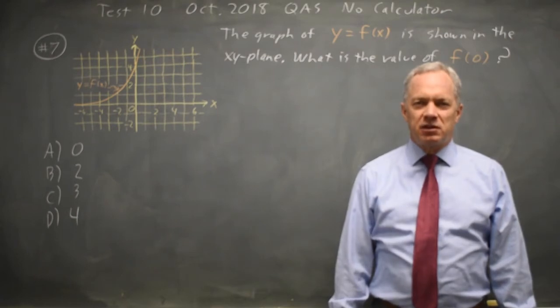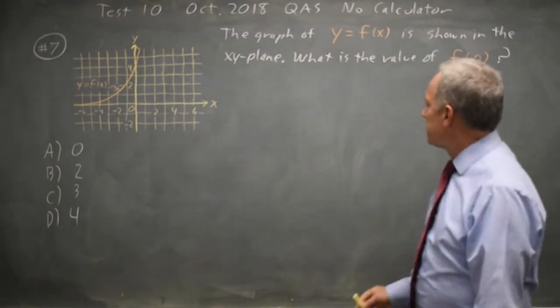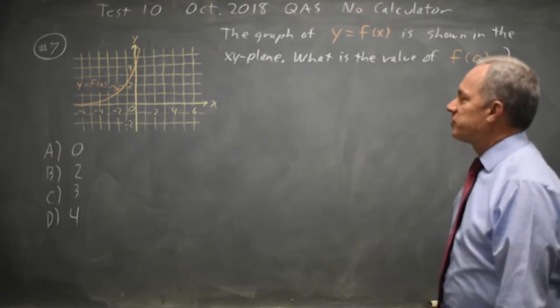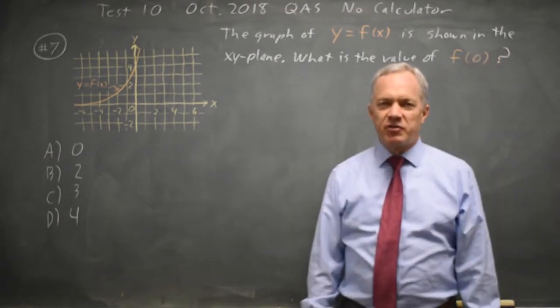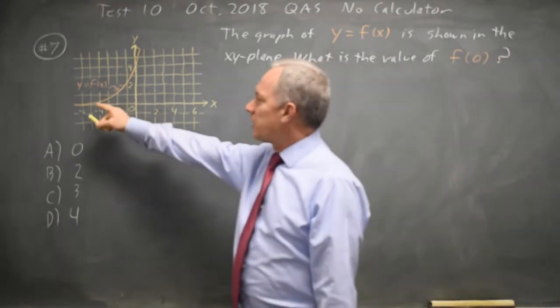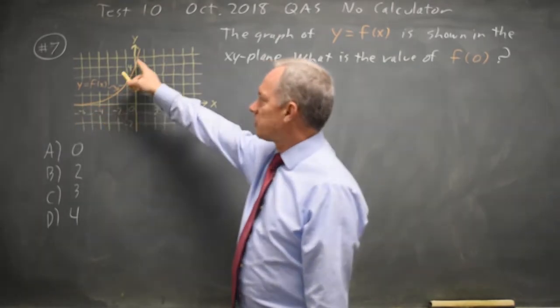This is question 7. The College Board is asking us to find the y-intercept, the value of f of 0, so that would be the y value when x equals 0, and y equals f of x is graphed here.